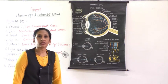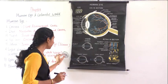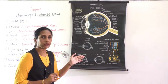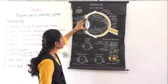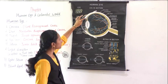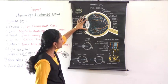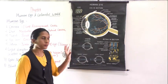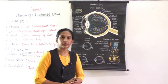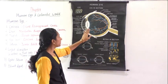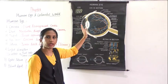The pupil is the small opening of the iris, also called the dark center. When light enters through the pupil, it falls on the lens behind it. The lens is supported and held in position by muscles called the ciliary muscles, which maintain the lens behind the pupil.